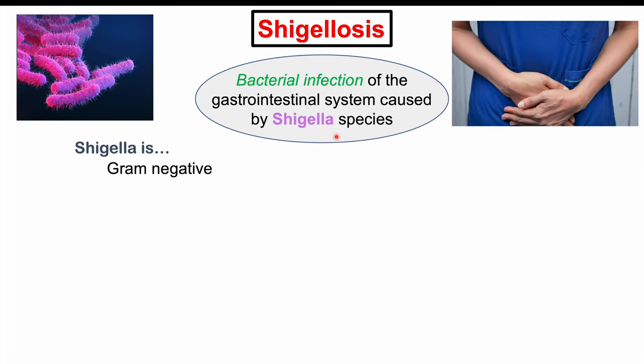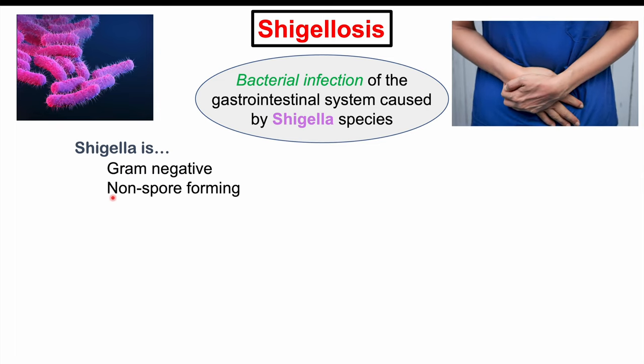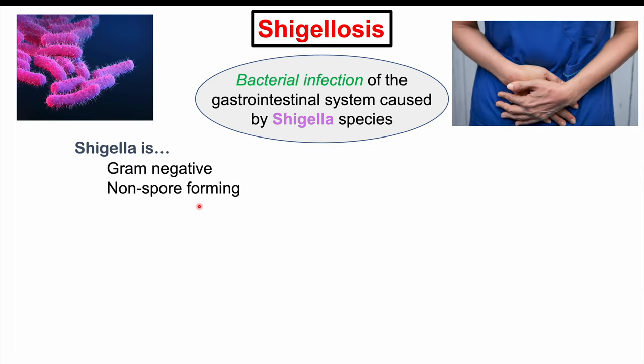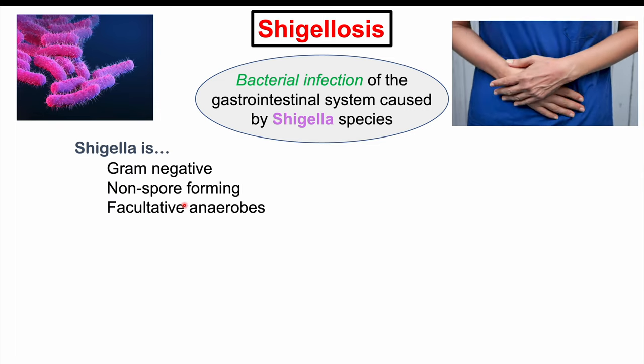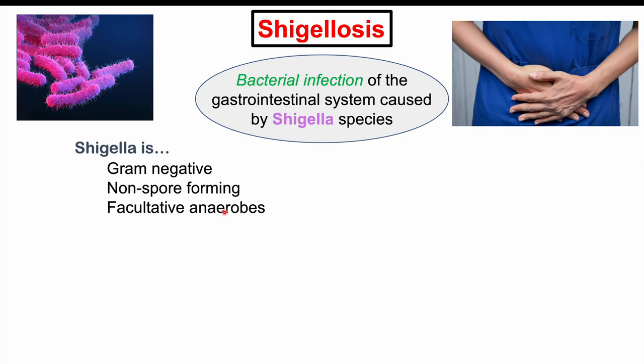Shigella is a gram-negative bacteria. It's also non-spore forming. It's a facultative anaerobe, which means that it can live anaerobically without oxygen, but it doesn't have to. And it's non-encapsulated.